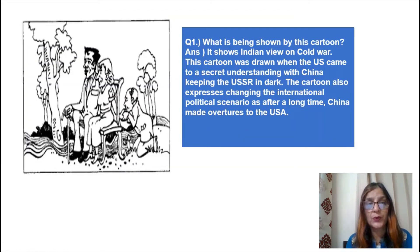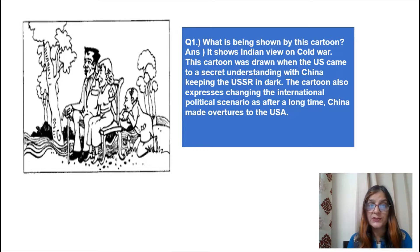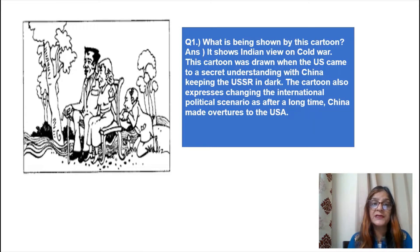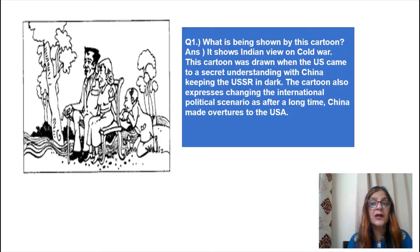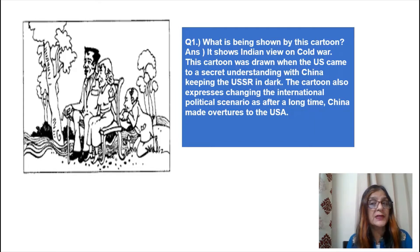The first cartoon is from the chapter The Cold War Era. During the Cold War period there was support from China's side to the Soviet Union because both of them had the same ideology of communism and followed socialist principles of economy. But in this cartoon we see two images on the bench — one representing the US and one representing the Soviet Union — and the image behind the bench is shown as China. This cartoon expresses the changing international political scenario as after a long time China made overtures to the USA.